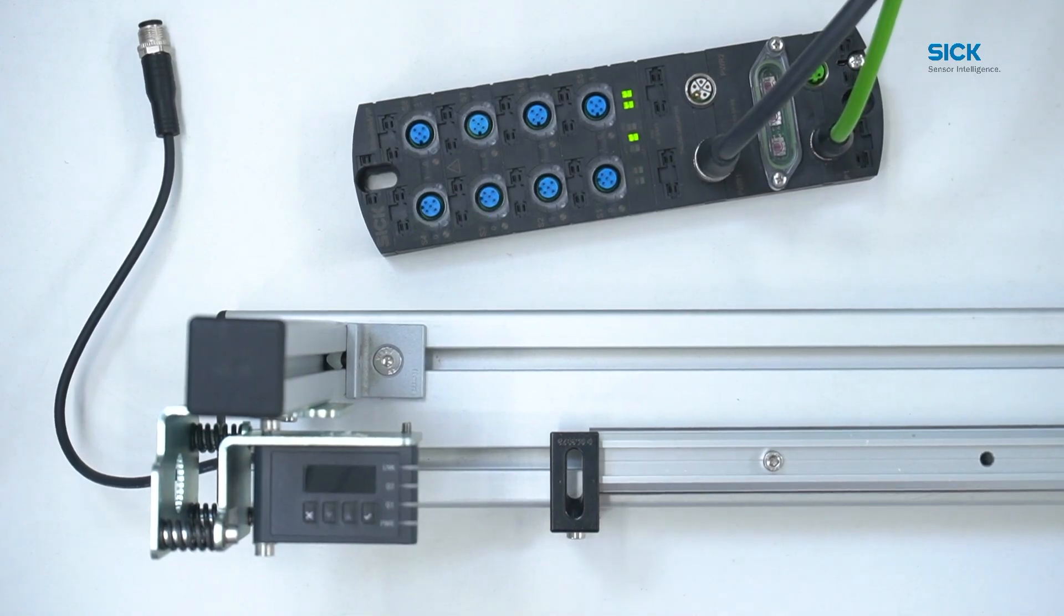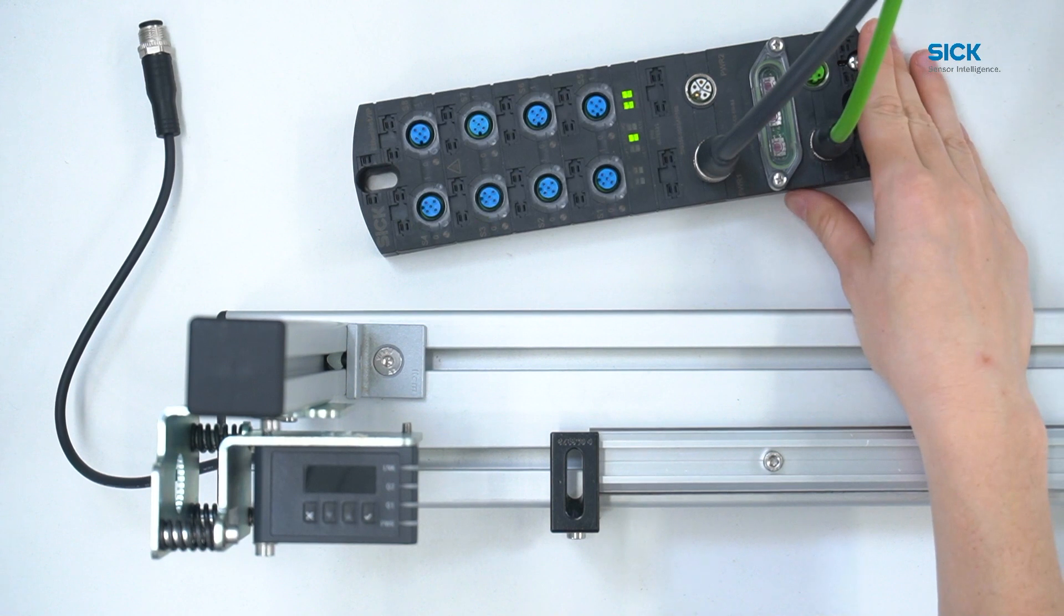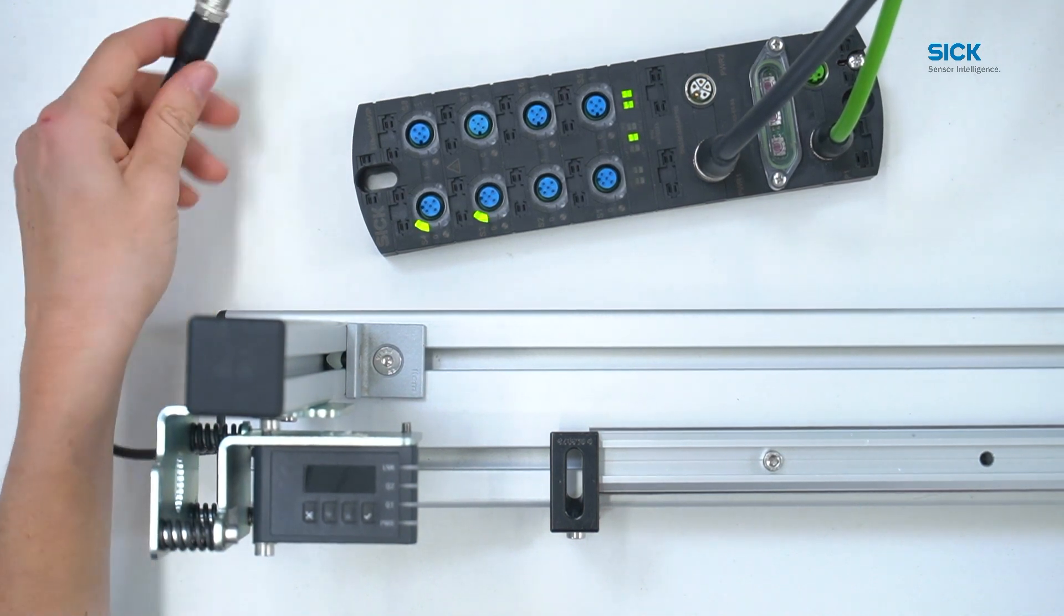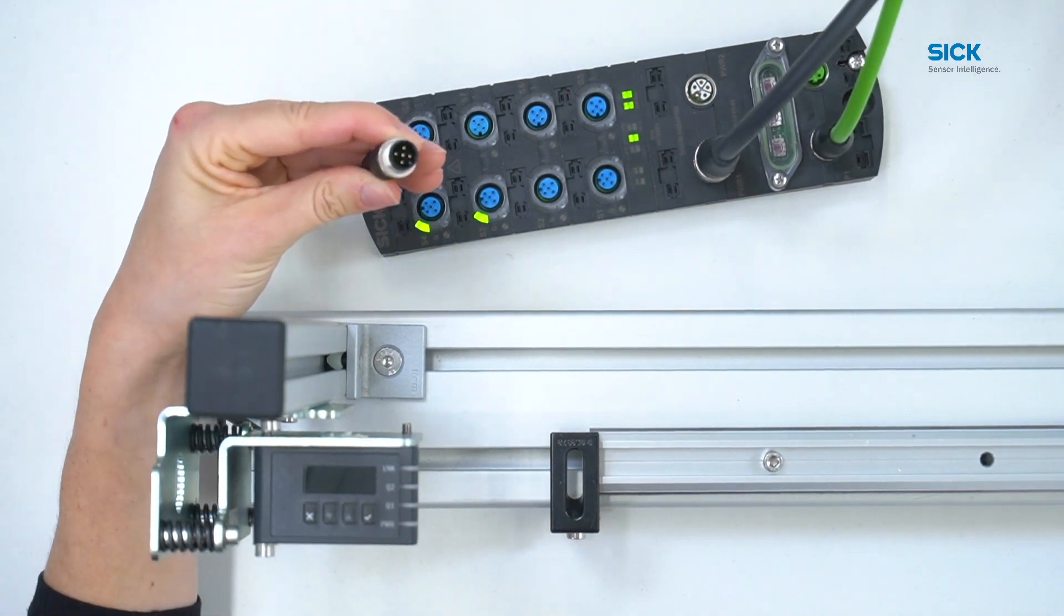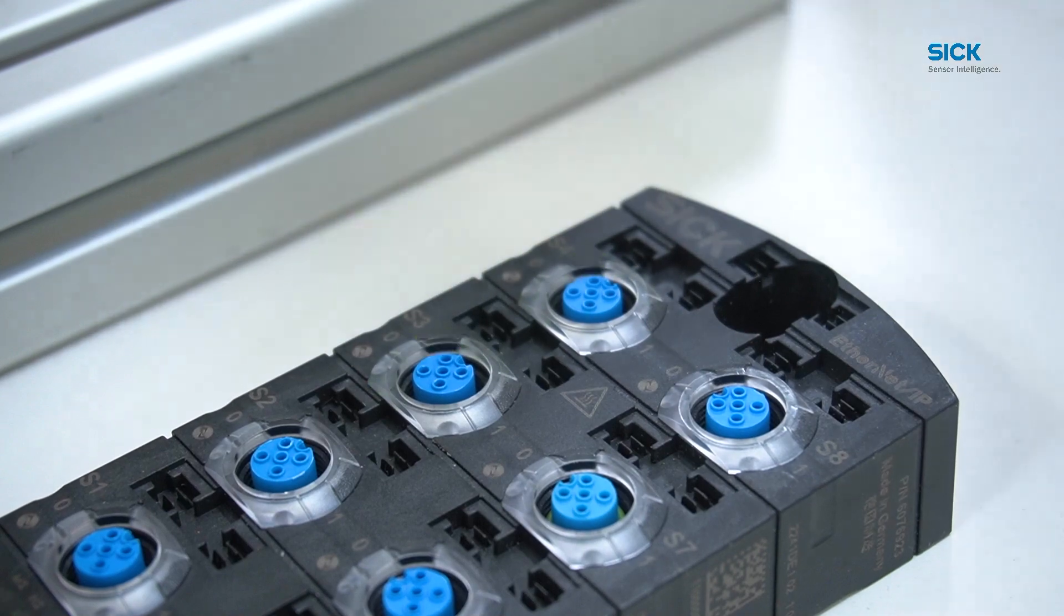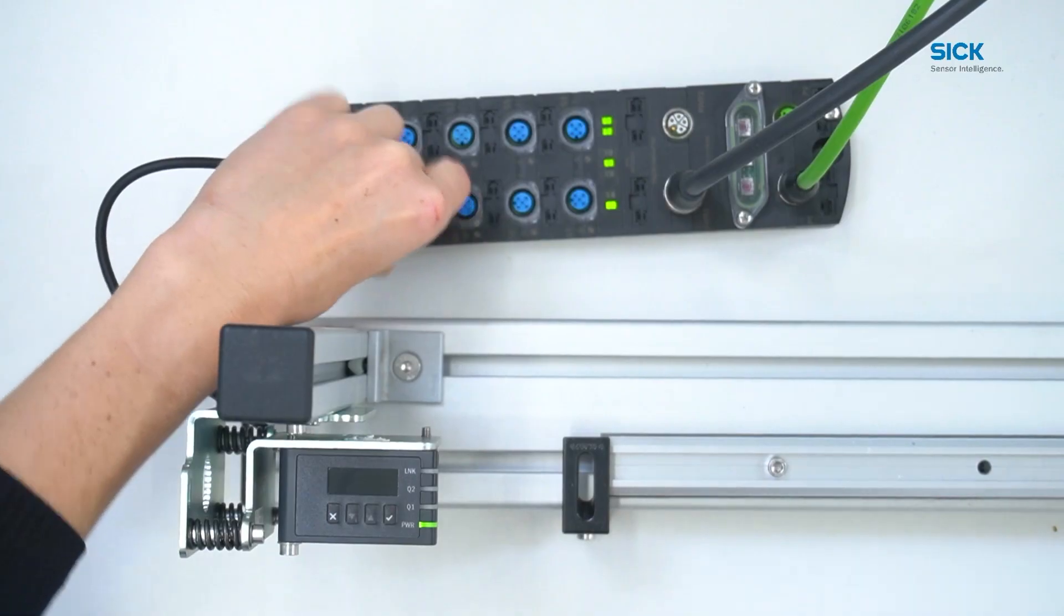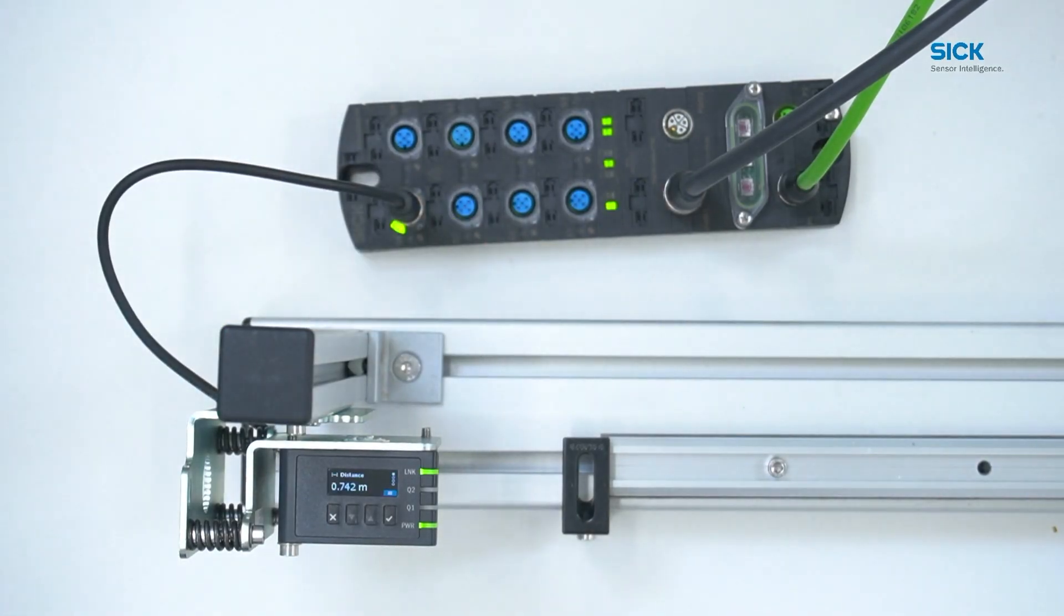In this tutorial, we are using a SICK350, but you also have the option to use any other IO-Link master. To establish an IO-Link connection, simply plug the DD80's M12 connector into the IO-Link master. As soon as you connect the device to a power supply, it's ready to operate.